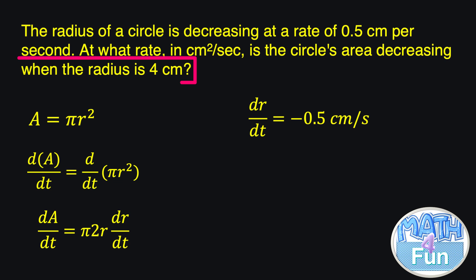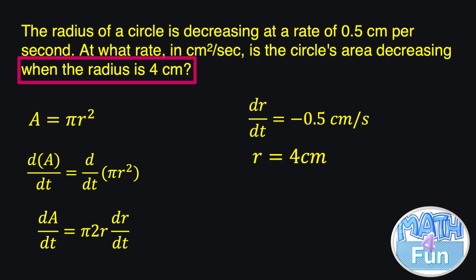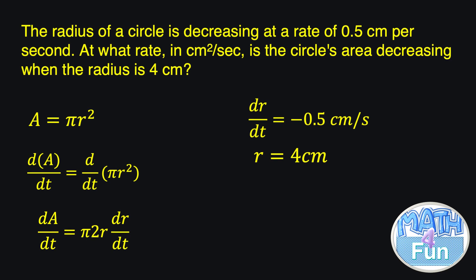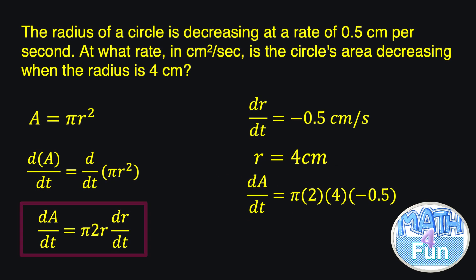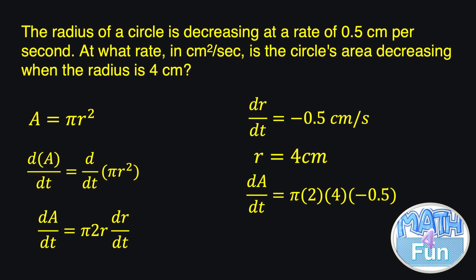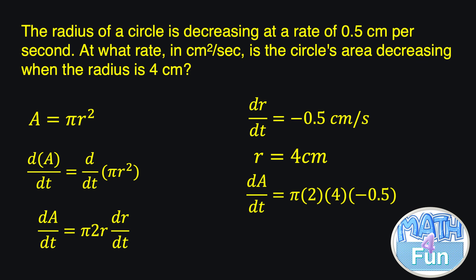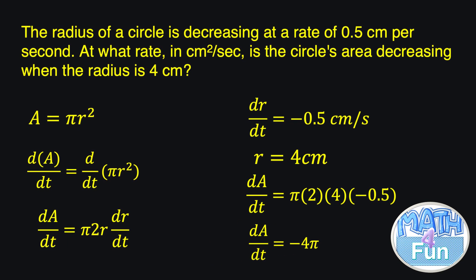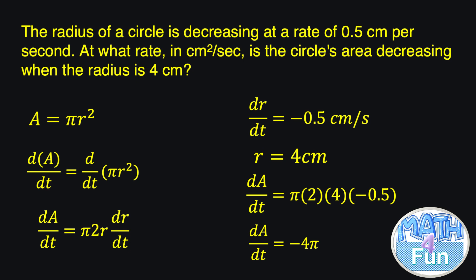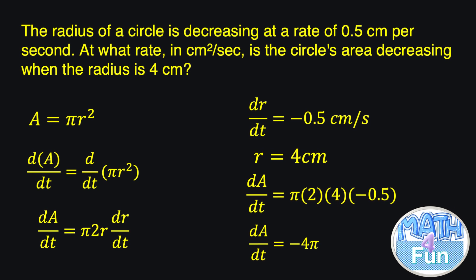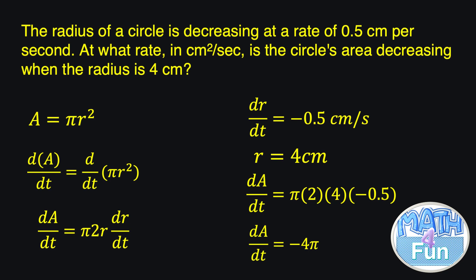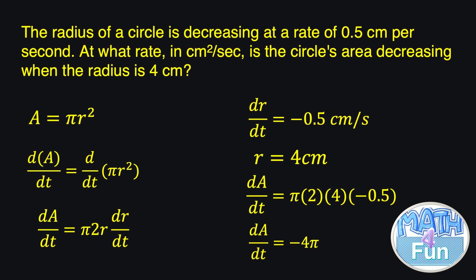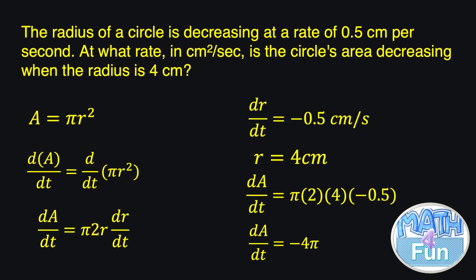At the end, they said the radius is 4 cm, so r equals 4. Replacing all the given into the equation: dA/dt equals π times 2 times 4 times (−0.5). Simplifying: 2 times −0.5 is −1, times 4 gives −4π. This confirms the area is decreasing. When we state the answer, since the area is decreasing, we say the rate is 4π — no need to mention the minus sign.